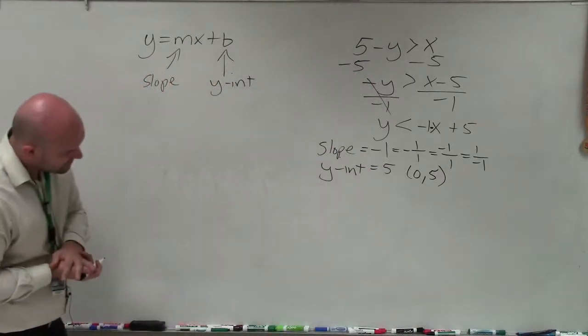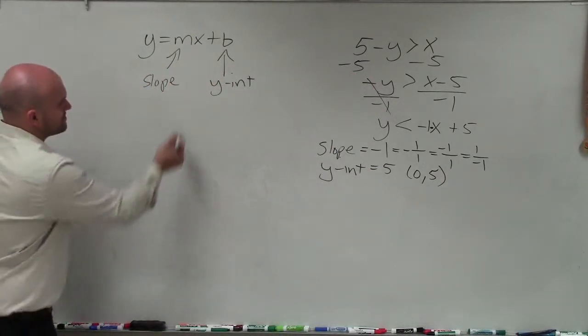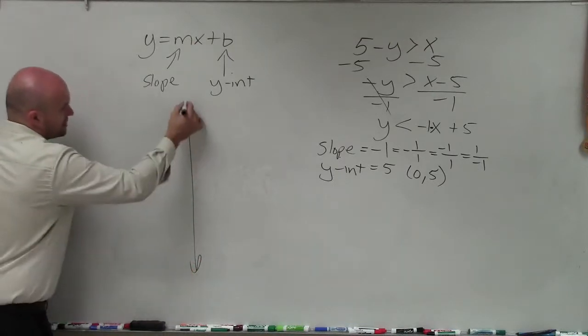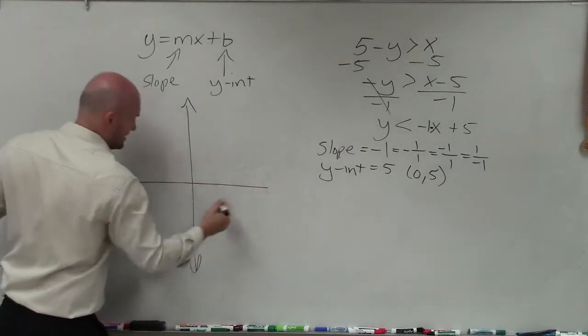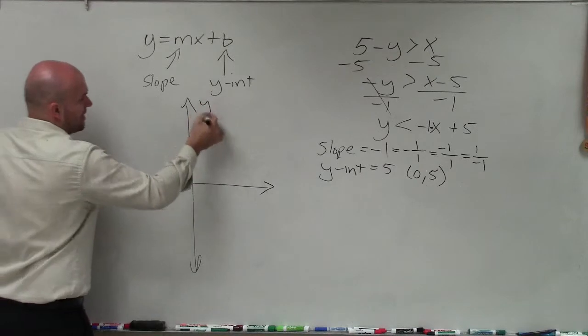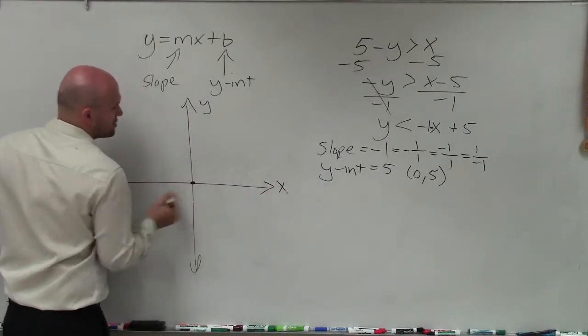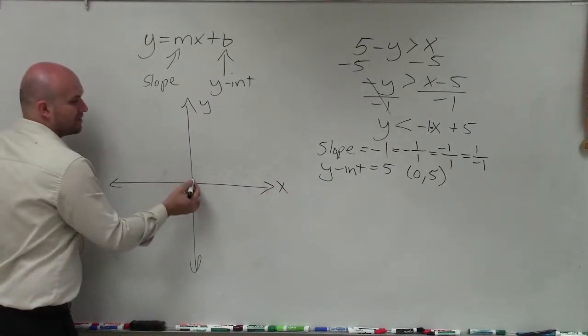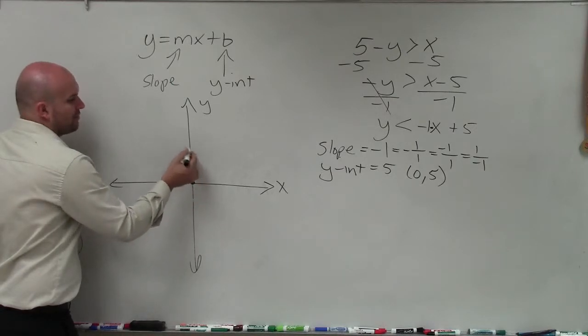So now we have 0 comma 5 as our y-intercept. So when graphing, the first thing we want to do is graph our y-intercept. So here's my y-axis. Here's my x-axis. Here's the origin, which is at 0, 0. So to plot the point 0, 5, I'm going to go up five units: 1, 2, 3, 4, 5.